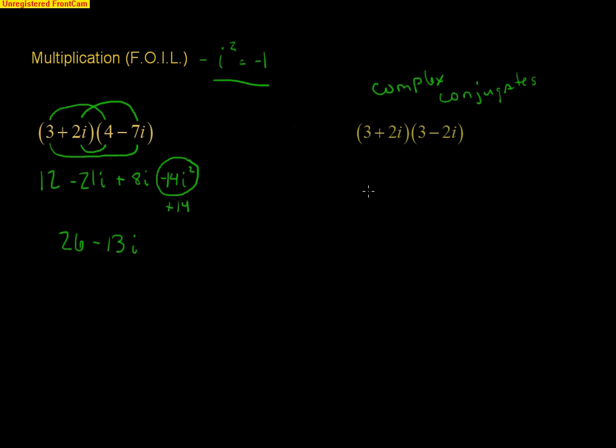Now, very similar to what you did in Algebra 1 with difference of squares. You will see that when you do your FOIL, we're going to have 9 and then minus 6i and then plus 6i and then a minus 4i squared. Just like you did when you did FOIL back in Algebra 1, those middle terms with conjugates are going to cancel out.